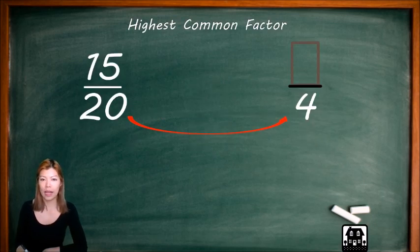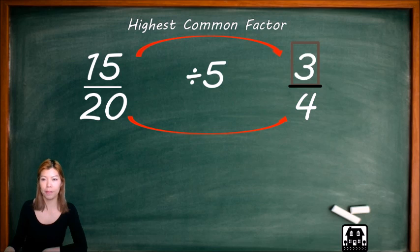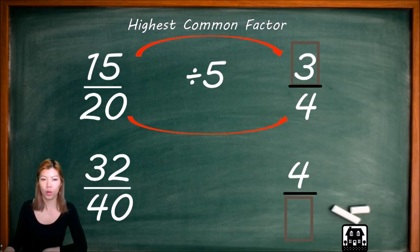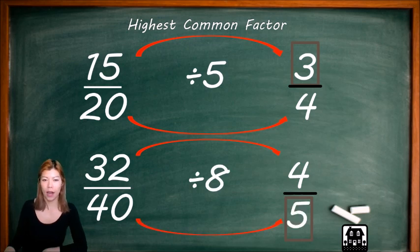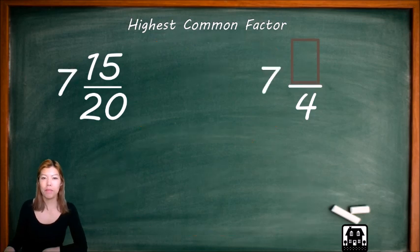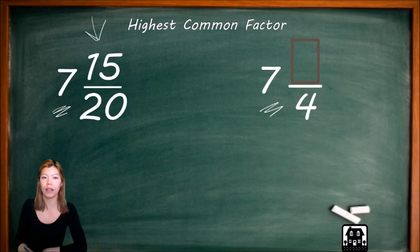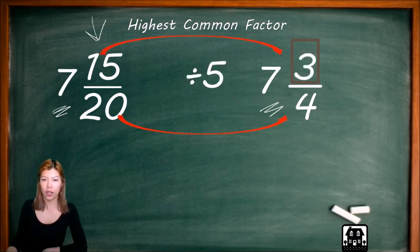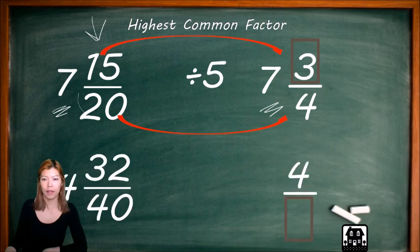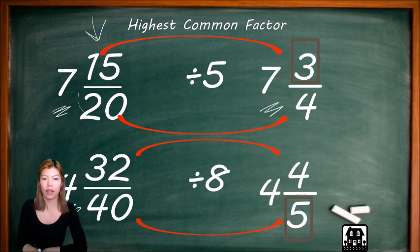Let's try this. 20 divided by 5 is 4, so we divide the top by the same number and get 3. 15 over 20 is the same as 3 quarters. Another example: 32 divided by 8 is 4, so we divide the bottom by the same number and get 5. Now what happens when we get mixed numbers? We completely ignore the whole number because we're only simplifying the fraction part. 20 divided by 5 is 4, so 15 over 20 becomes 3 over 4, and we do nothing to the whole number. Similarly for 32 divided by 8 — divide by 8 — and you do nothing to the whole number; you leave it there.